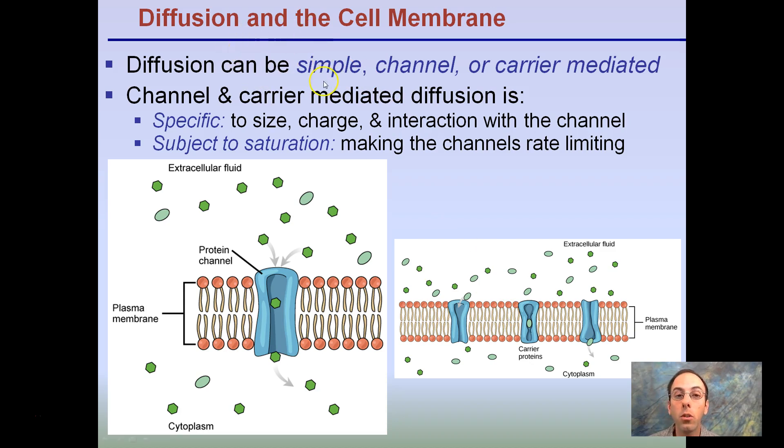Way to think about simple diffusion: if someone sprays perfume in one side of the room, eventually it'll work its way all the way over to the other side of the room. Channel or carrier-mediated involves these carrier proteins, and we're looking more specifically at a cellular example here. Specific to size, charge, and interactions with the channel. For example, this channel is transferring these small green molecules and not these lighter oval-shaped ones. It's very specific to just these types of molecules. This other carrier protein is specific to the lighter green oval-shaped ones.